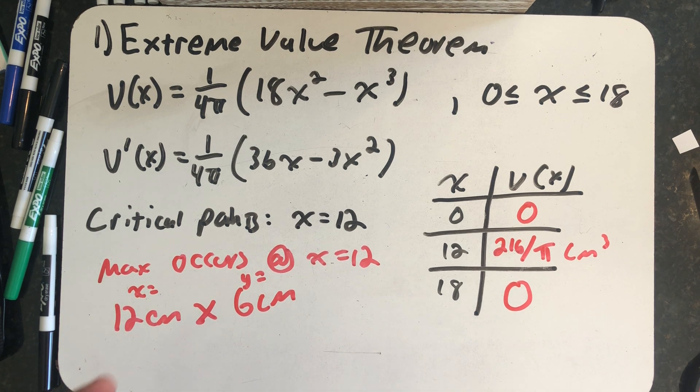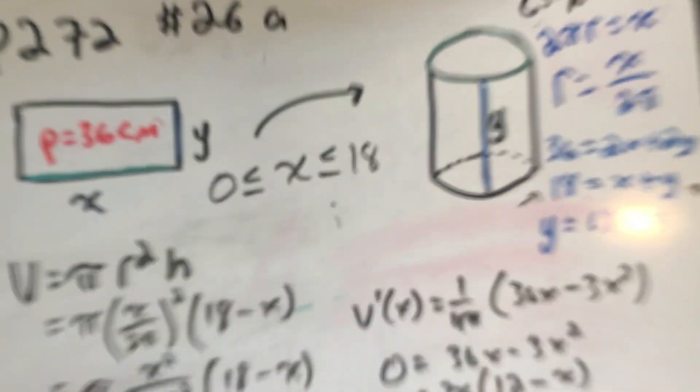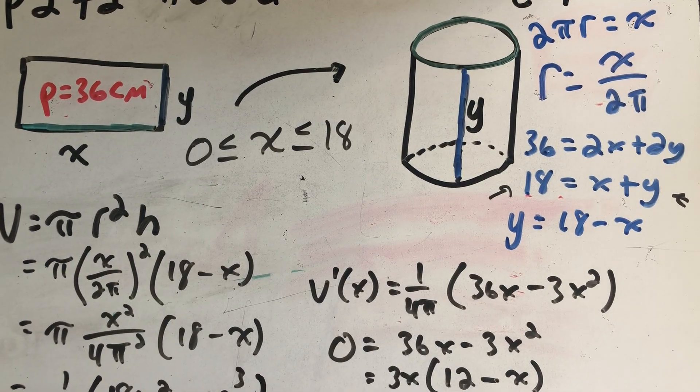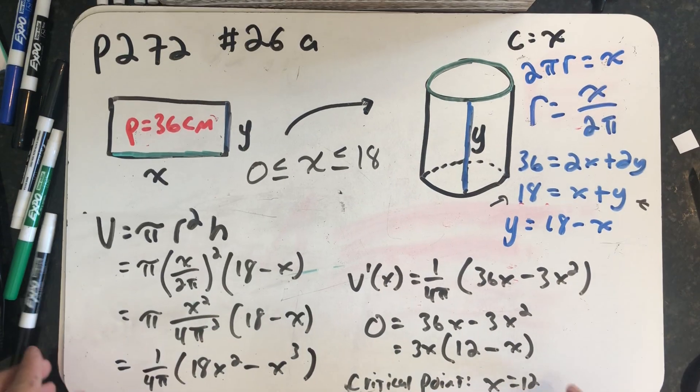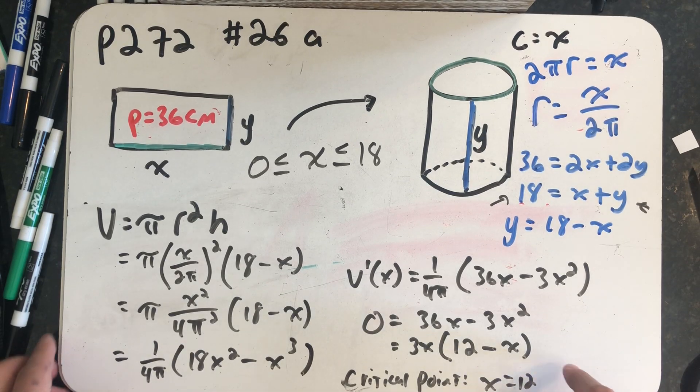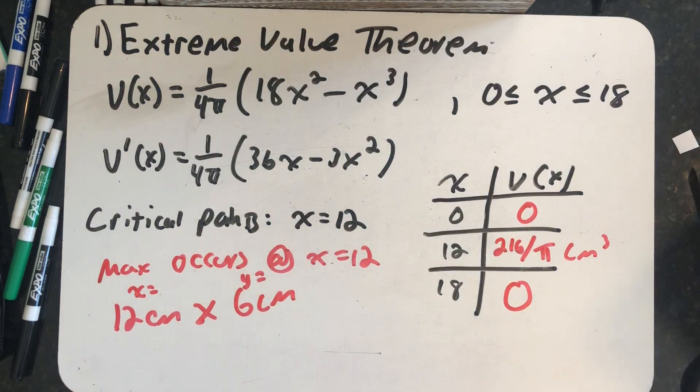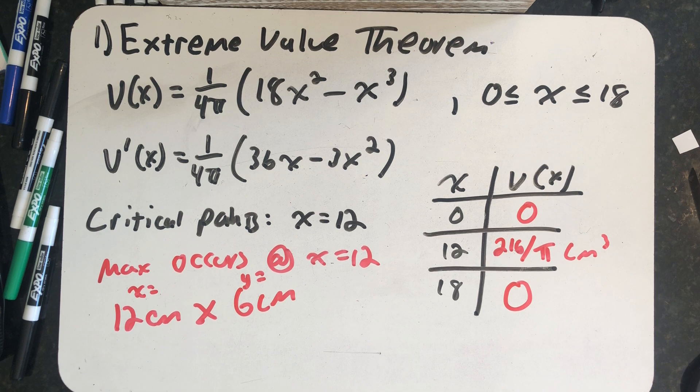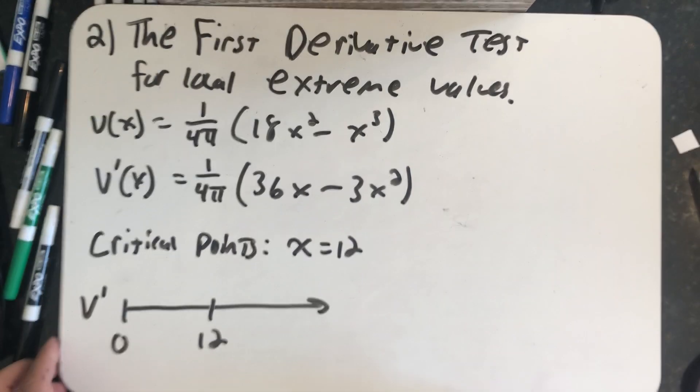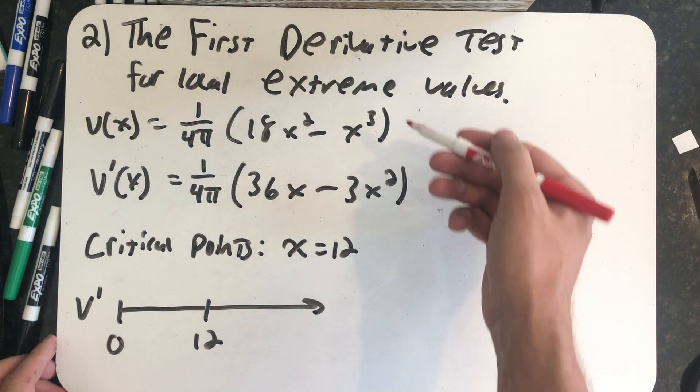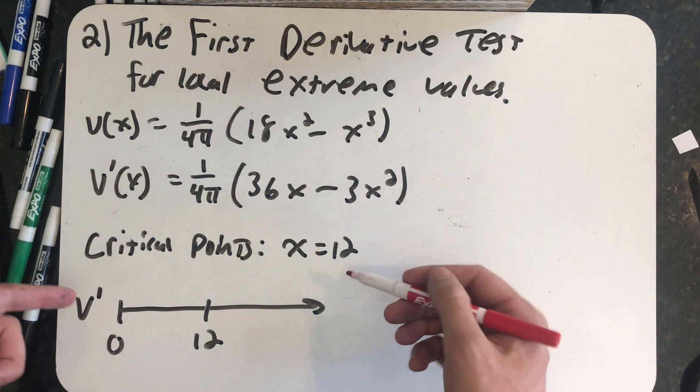So I wanted to solve this two other ways. So this would be one way and we're absolutely done. But I want to put us back in that situation where we've just arrived at this critical point. We've arrived at this critical point x equals 12. And we're saying, we need to check to see if a min or a max happened at that point. One of our other options would be to use the first derivative test for local extreme values. So again, we have a volume function, we have a first derivative, and a critical point.